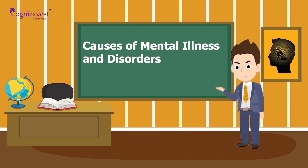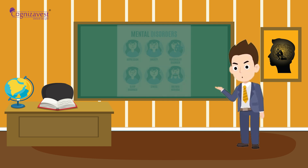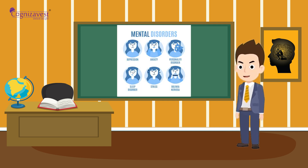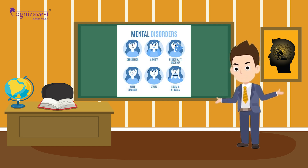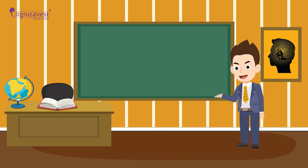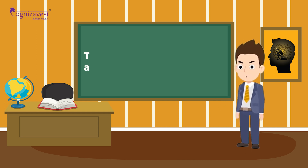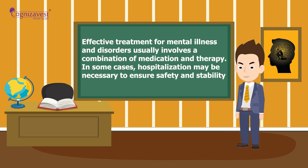The causes of mental illness and disorders are complex and can be influenced by a variety of factors including genetics, environmental factors, brain chemistry, and life experiences. It's important to understand that mental illness is not a result of personal weakness or character flaws. Effective treatment usually involves a combination of medication and therapy.